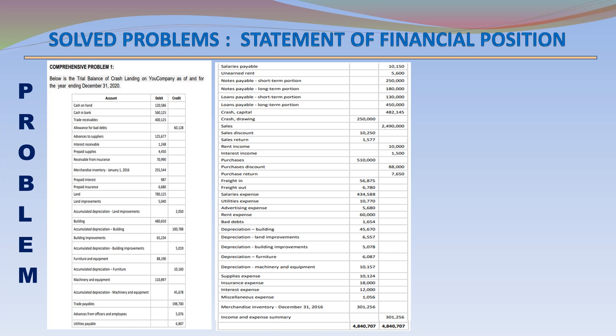Unearned Rent 5,600 (Credit); Notes Payable Short-Term Portion 250,000 (Credit); Notes Payable Long-Term Portion 180,000 (Credit); Loans Payable Short-Term Portion 130,000 (Credit); Loans Payable Long-Term Portion 450,000 (Credit); Crash Capital 482,145 (Credit); Crash Drawings 250,000 (Debit); Sales 2,490,000 (Credit).